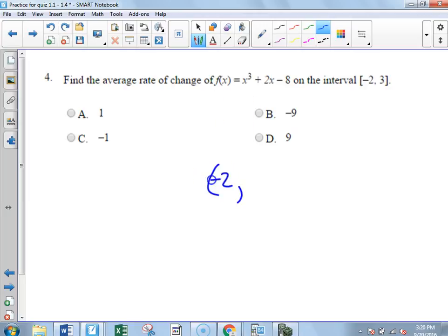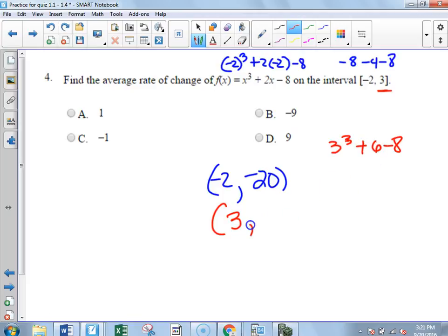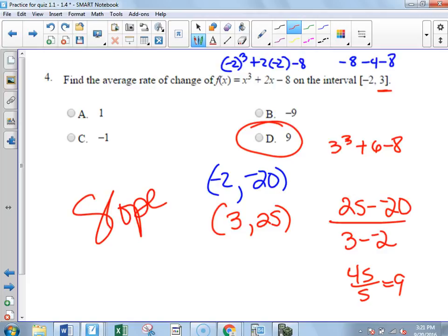You put in a negative 2 in here. So you go negative 2 cubed plus 2 times negative 2 minus 8. That becomes negative 20. Did I get that right, guys? Then you put in the 3 here. So you'd have 3 cubed plus 6 minus 8 is 27, 25. And then you do the slope. So 25, I'm going bottom to top this time. It doesn't matter which way you go, but you do the y's over the x's. This becomes 45 over 5 is 9, which is choice D. Make sure you do change in y over change in x, though, okay? All right.